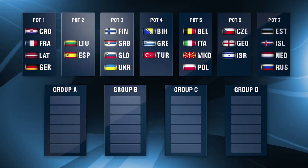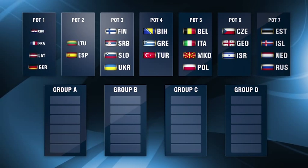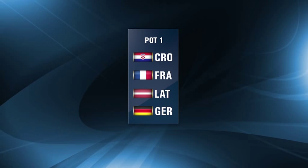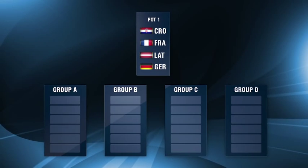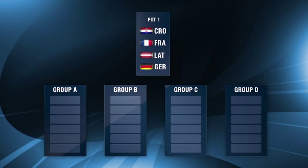All 24 teams will then be drawn and placed into four groups: Group A, B, C and D. Pot 1 containing the four host countries will first be drawn into their respective groups A, B, C and D and in their relevant seeded line within the group.